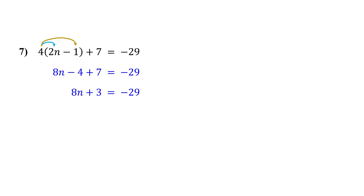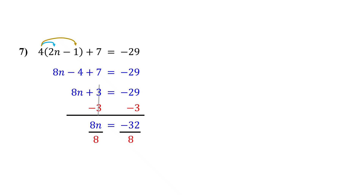It is now just a two-step equation. So next, isolate 8n by subtracting 3 from both sides. On the left, the 3s cancel out, leaving 8n. Negative 29 minus 3 gives us negative 32. Now divide both sides by 8 to get n by itself. The 8s cancel out, leaving n. Negative 32 divided by 8 is negative 4. So the solution is n equals negative 4.